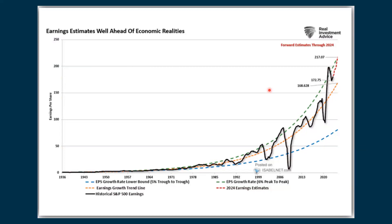We can also look ahead at earnings projections going forward. This chart from Real Investment Advice, which I've used for the past few weeks, says earnings estimates are well ahead of economic realities. We've been seeing a little bit of a downshift over the last six months to a year as earnings projections come down. Then companies come out with their earnings reports beating the estimate, and the stock goes up — that's a little game that goes on, but it's a game we know about.